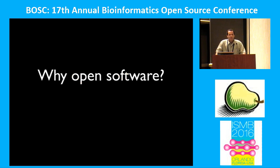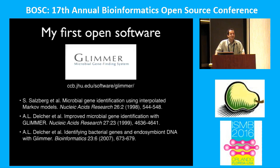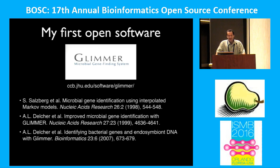Let me talk about open software first. I've been releasing my software as open source for a long time, starting back in the late 90s with a program called Glimmer. Glimmer is a program for bacterial gene finding that we developed when I first started working with people at the Institute for Genomic Research, or TIGR. Many of you have probably heard of TIGR — it's not with us anymore. In 2006 it got renamed the J. Craig Venter Institute. I was at TIGR for a number of years, and in the late 90s and early 2000s we were the world's leading center for microbial genome sequencing.